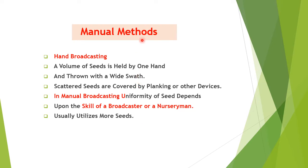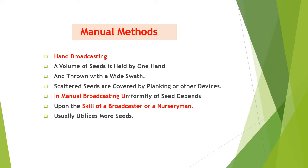Broadcasting can be done manually or mechanically. In hand broadcasting, a volume of seed is held in one hand and thrown with a wide swath. Scattered seeds are covered with soil using planks or other leveling devices. Uniformity of distribution depends upon the skill of the broadcaster. Manual broadcasting tends to use more seeds due to uneven distribution.